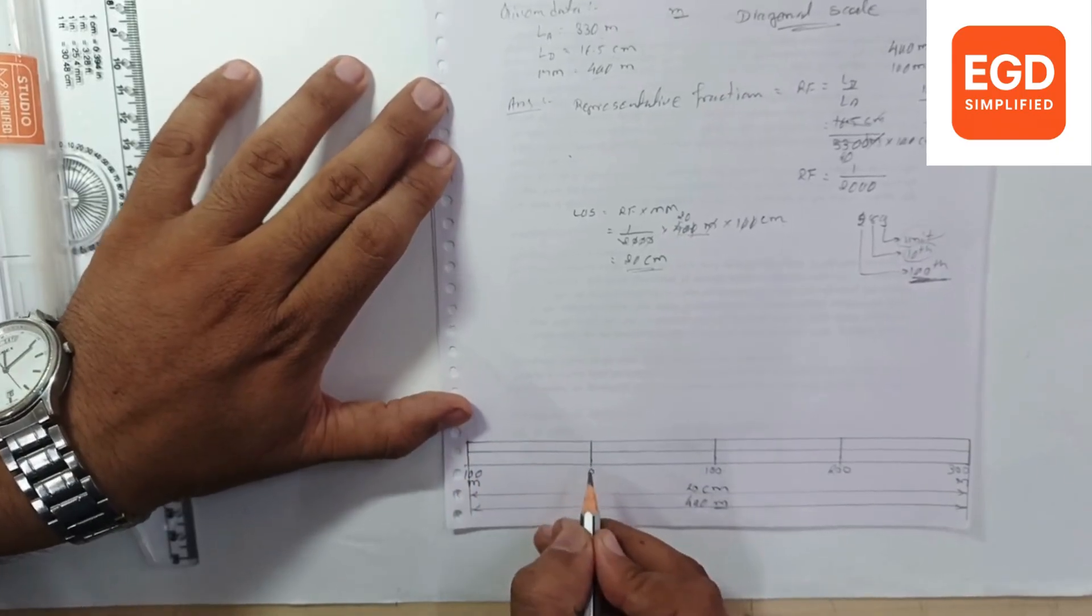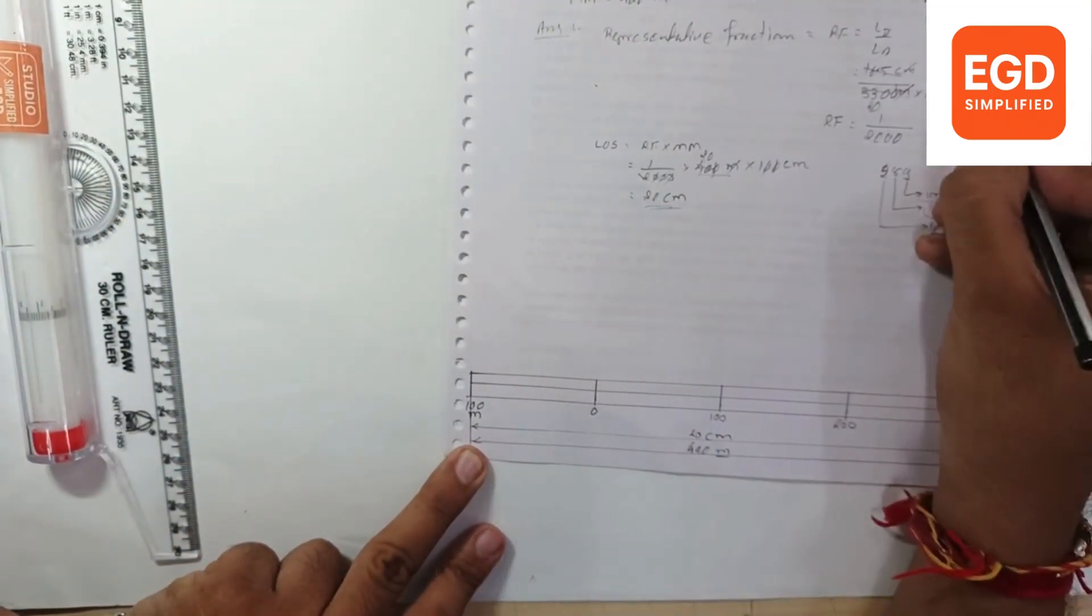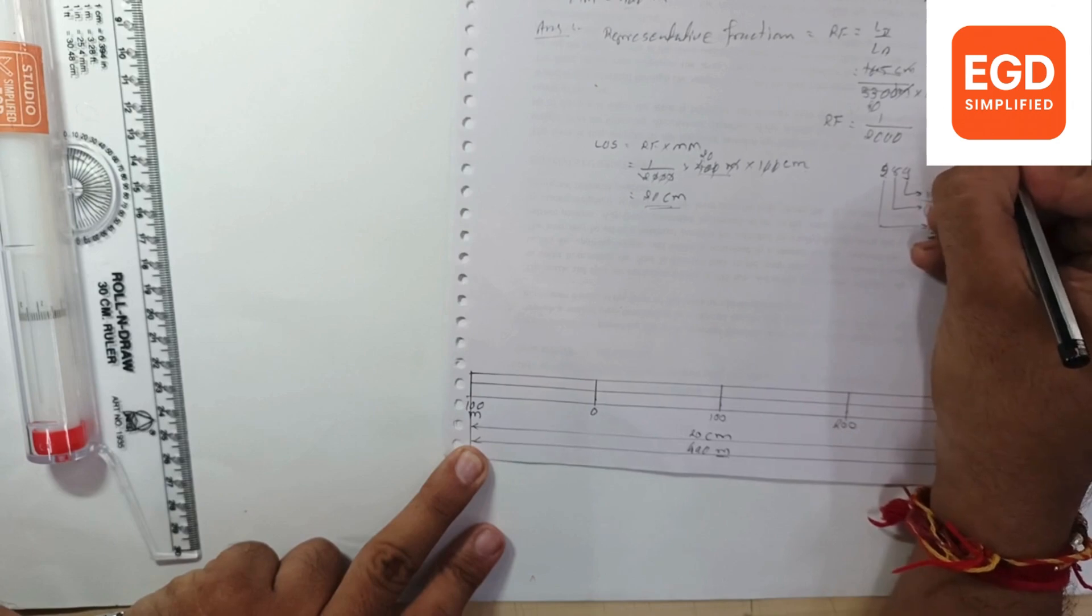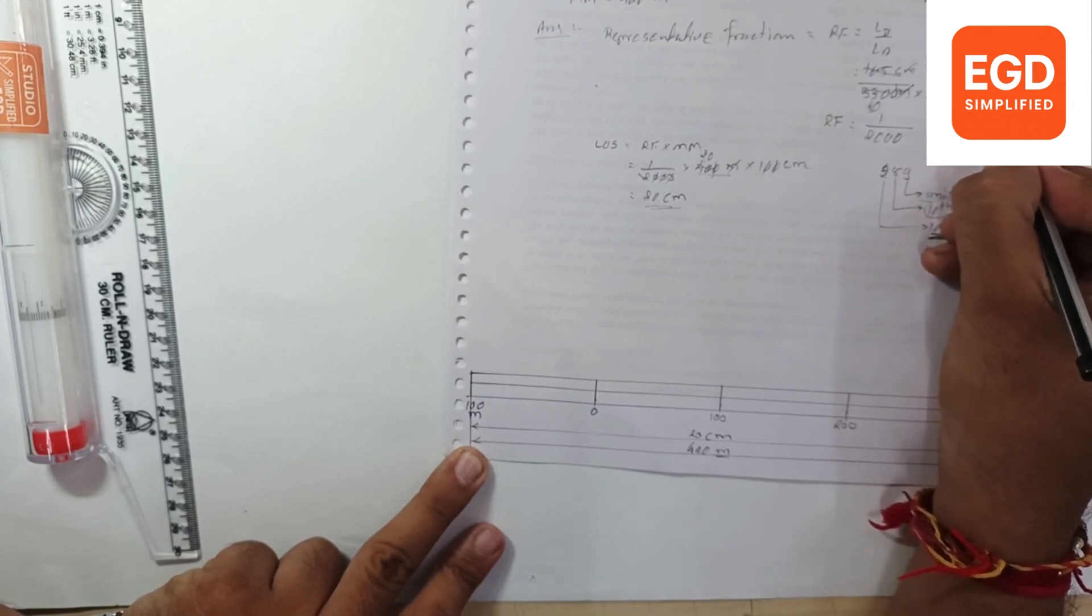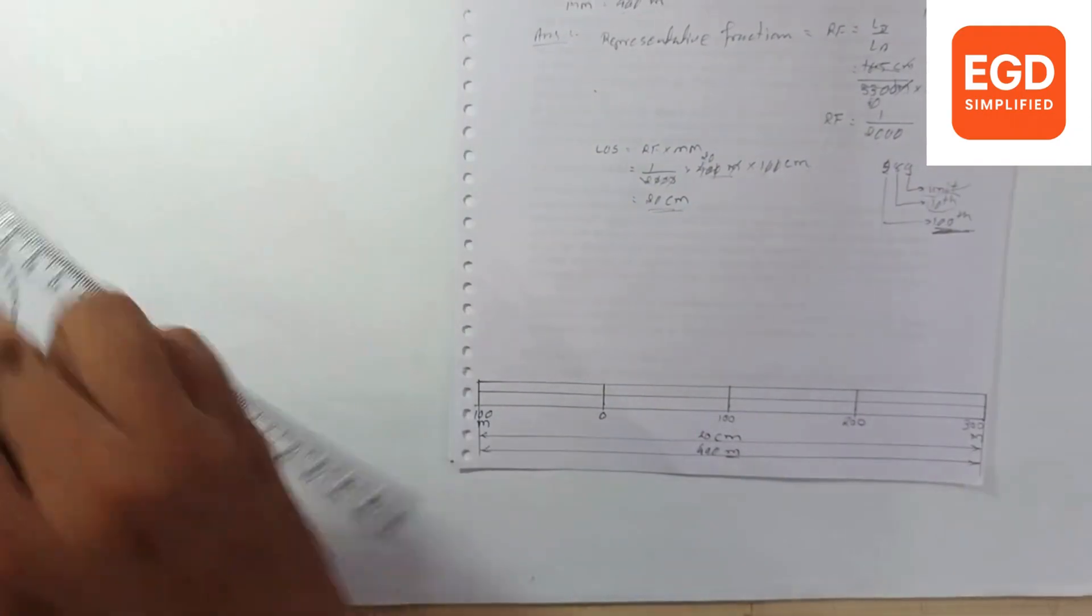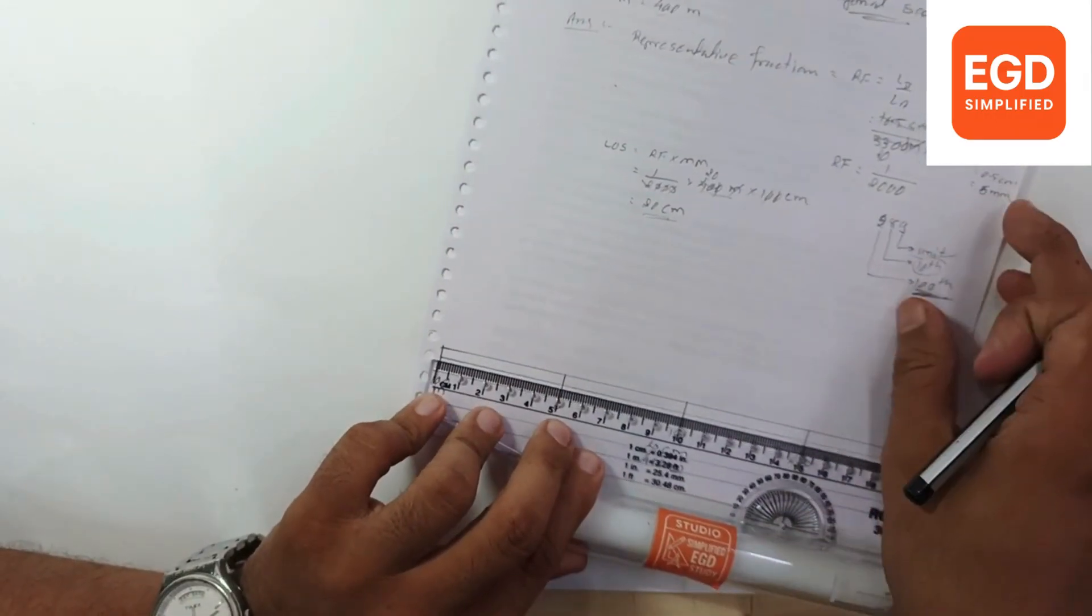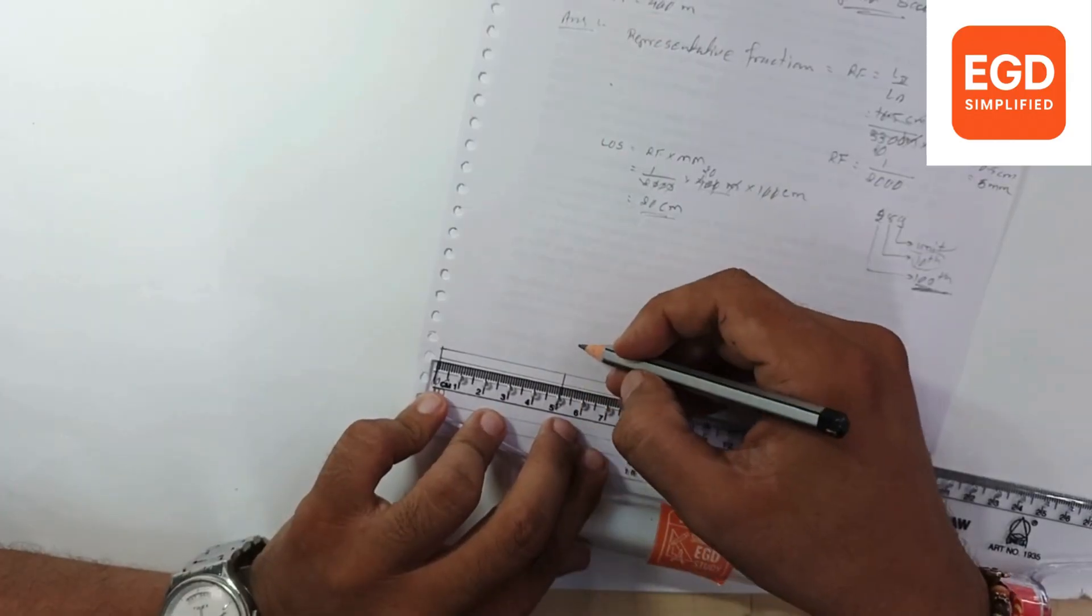Now we will divide this 100 into 10 equal parts. So we have how much long line? 5 centimeter long line divided by 10. So every 0.5 centimeters or you can say 5 mm measurement, we will plot blocks.